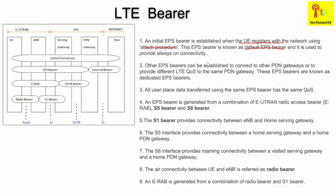Along with the default EPS bearer, there is another kind of EPS bearer which is formed to provide different QoS. If the UE needs a different QoS for the same PDN gateway, then a different EPS bearer will be used, known as the dedicated EPS bearer. So the EPS bearer can be of two types: the default EPS bearer, established during the attach procedure, and the dedicated EPS bearer, formed if the UE requires different QoS for the same PDN gateway.